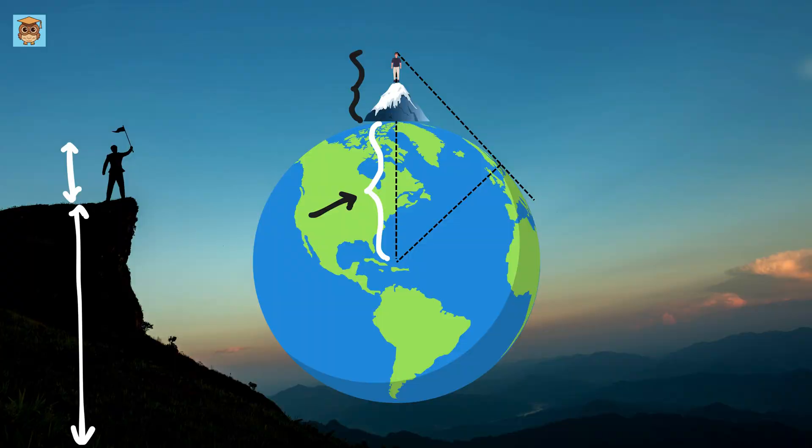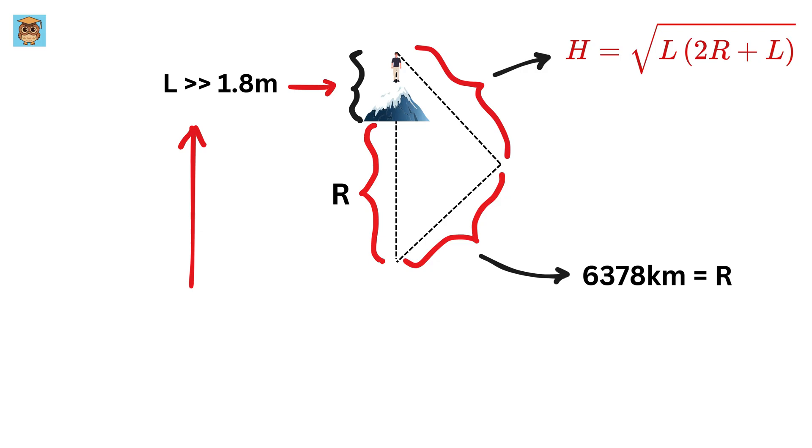Now, what happens if you go higher? Assume if you're on a hill or a tall building, this L will be greater. Let's say you're standing on a hill that is 100 meters high, including your height.